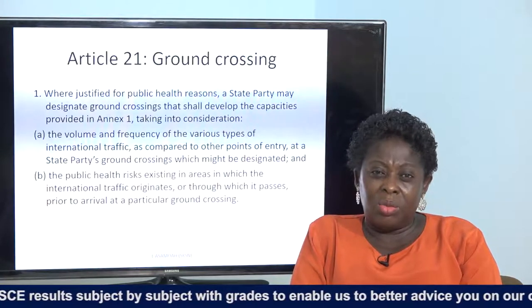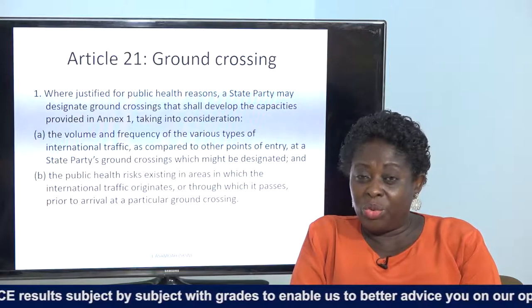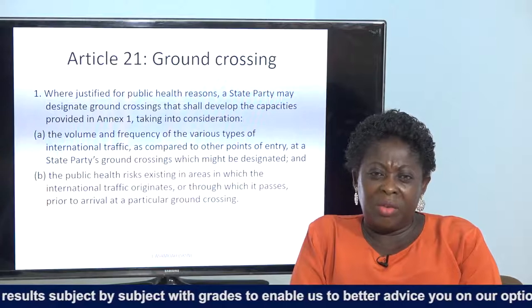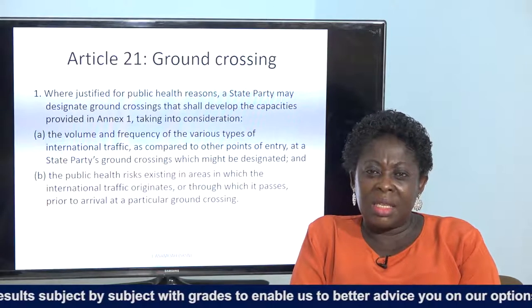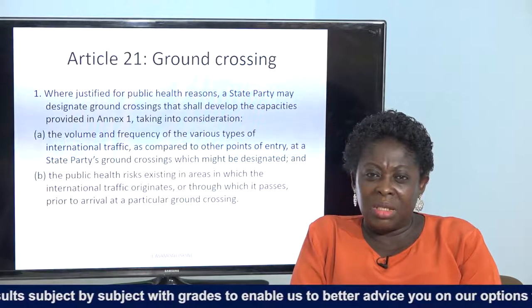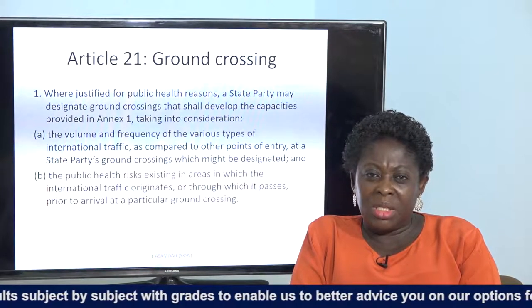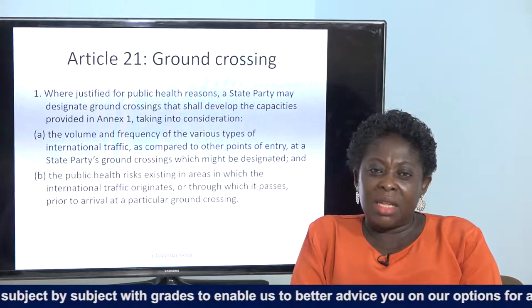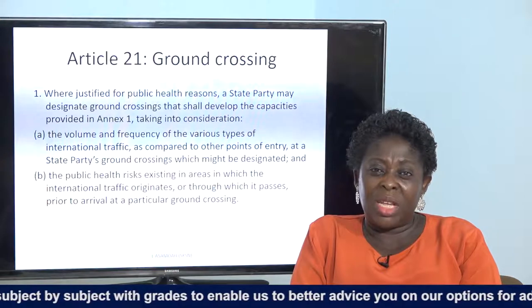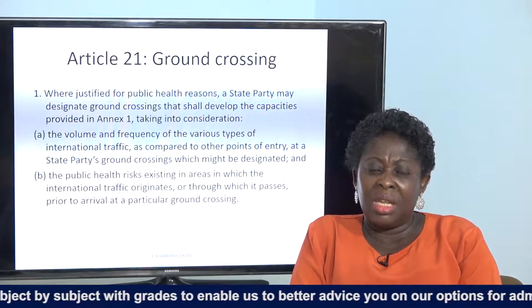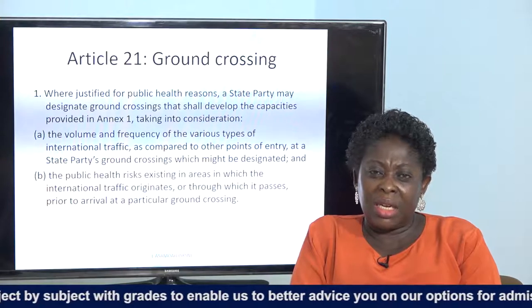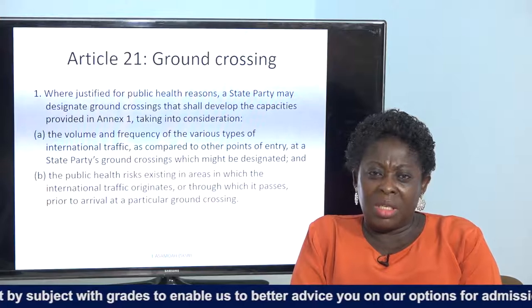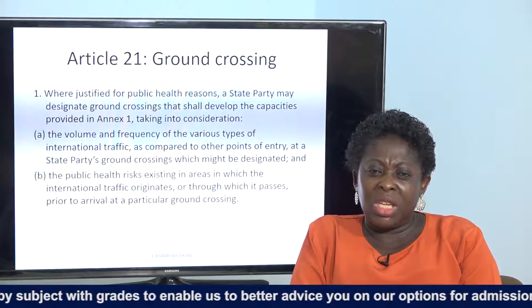Article 21 talks about ground crossings. Where justified for public health reasons, a state party may designate ground crossings that shall develop the capacities provided in Annex 1. We are still on the capacities and training that should be given when it comes to implementation of these guidelines.